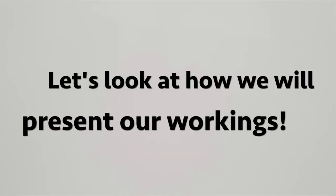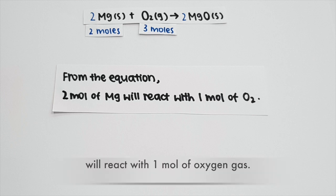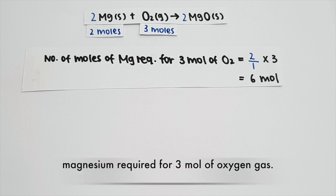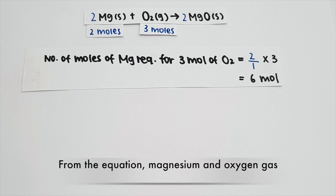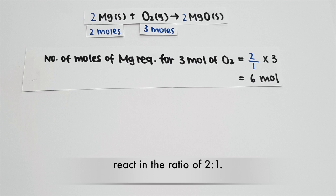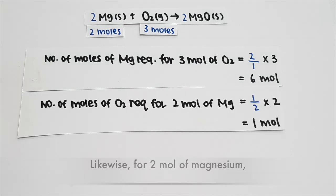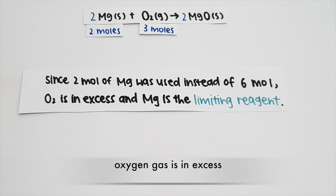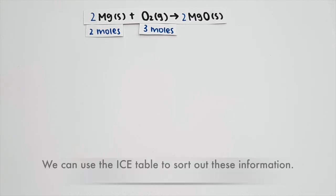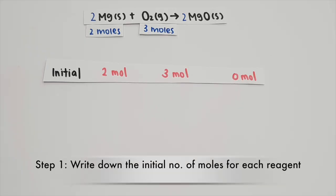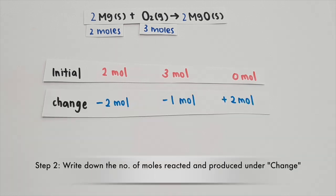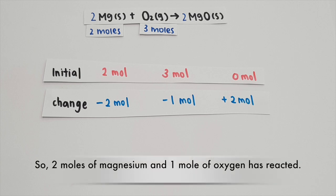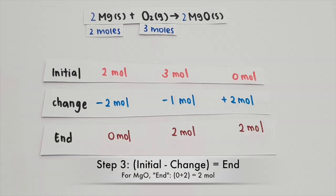Let's look at how we will present our workings. From the equation, two moles of magnesium will react with one mole of oxygen gas. We need to find out the number of moles of magnesium required for three moles of oxygen gas. Magnesium and oxygen gas react in a ratio of 2:1. Hence, we need six moles of magnesium for three moles of oxygen gas. For two moles of magnesium, we will need one mole of oxygen. Since two moles of magnesium was used instead of six moles, oxygen gas is in excess and magnesium is the limiting reagent. We can use the ICE table to sort out this information. We write down the initial number of moles for each reagent, followed by the number of moles reacted and produced under change. Two moles of magnesium and one mole of oxygen has reacted. Thus, for magnesium oxide, zero moles plus two moles gives us two moles of magnesium oxide.